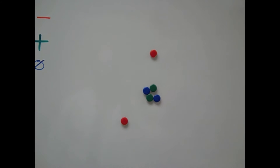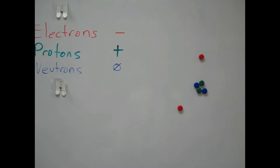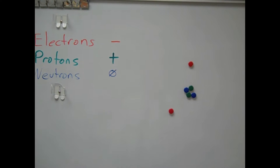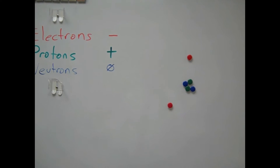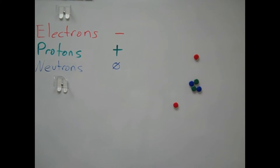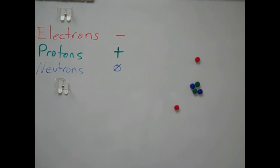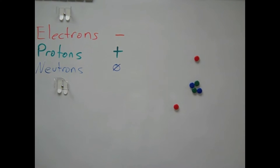Let's take a look at our makeshift atom over here. If you notice, we have two electrons, two protons, and two neutrons. So we're going to say that this atom is neutral — it has no charge. It has the same number of protons and electrons.